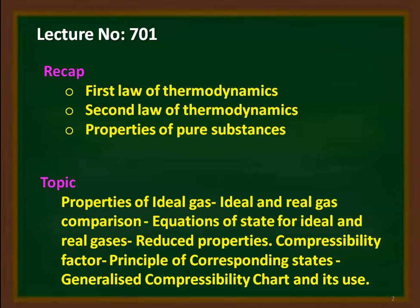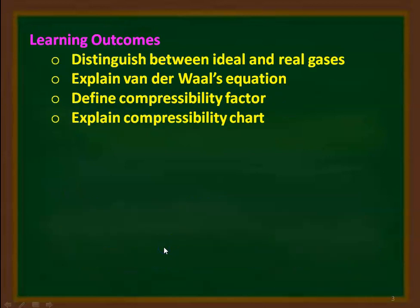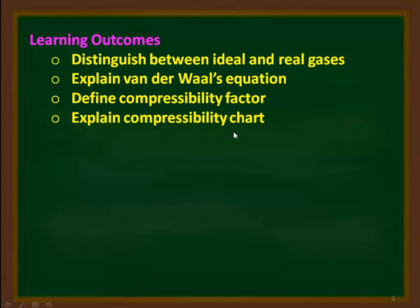Lecture number 701 covers the following topics: properties of ideal gases, ideal and real gases comparison, equation of state for ideal and real gases, reduced properties, compressibility factor, principle of corresponding states, and generalized compressibility chart and its use. The learning outcome: at the end of the lecture, the student will be able to distinguish between ideal and real gases, explain Van der Waals equation for real gases, define compressibility factor, and explain the compressibility chart.